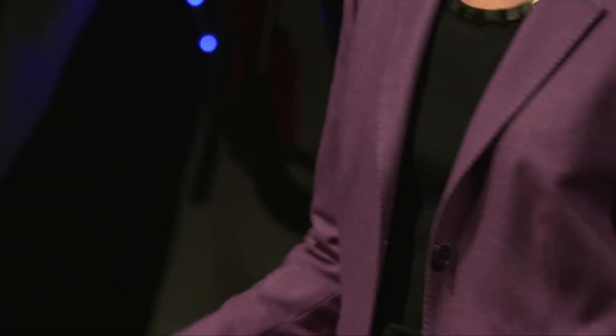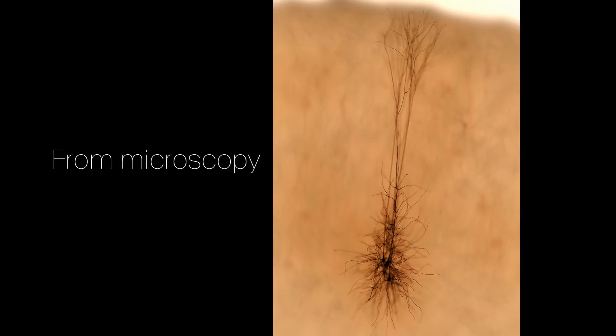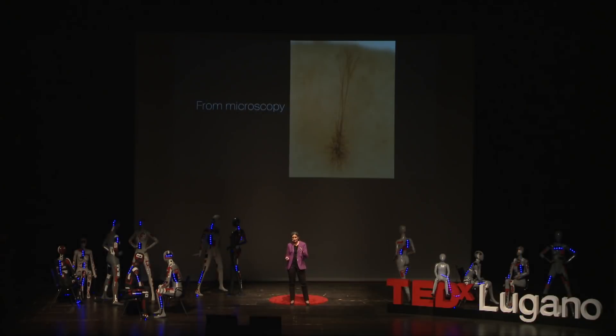The Blue Brain Project wanted to reconstruct this part of the brain. The input data for this reconstruction consisted of hundreds and thousands of painstakingly obtained microscopy images of all kinds of different neurons that show up in the somatosensory cortex. There are in fact 55 different types based on shape, so they took samples of all 55 types, gathered the data in the laboratory, and used that as input.